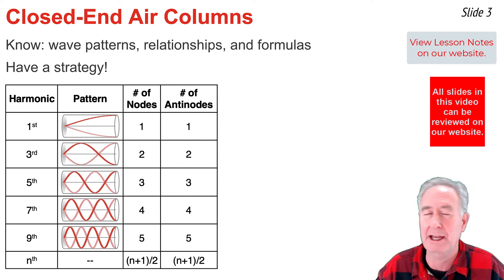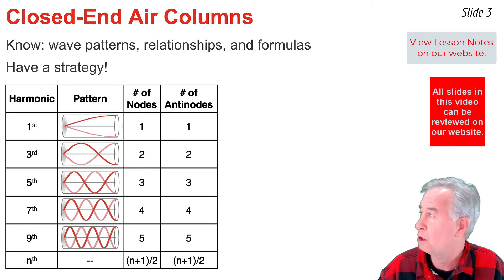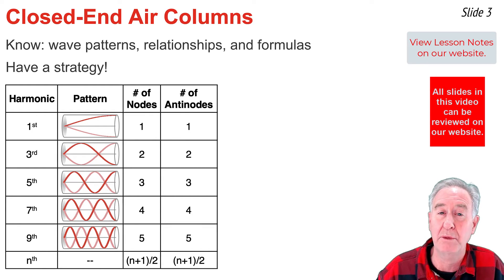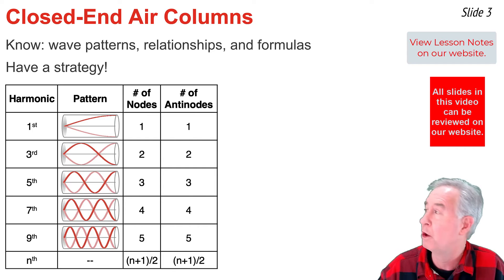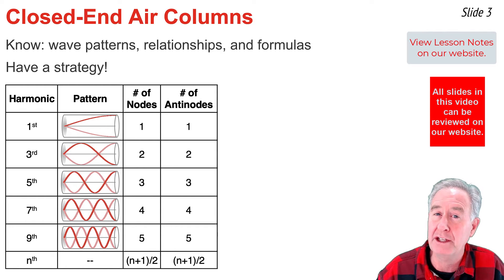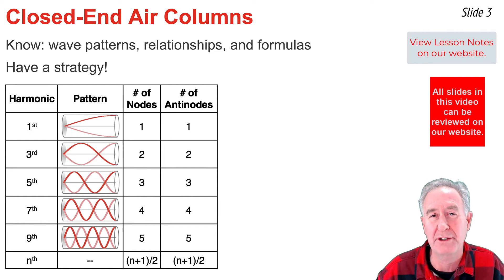In the second column of this table, the standing wave patterns are drawn for closed-end air columns. At the left end — the closed end — you'll always see a node, and at the open end there's always an anti-node. Because of this stipulation, the number of waves within each pattern is 1/4, 3/4, 5/4, 7/4, and 9/4 of a wave. Because the numerators of these fractions are odd numbers, all the harmonic numbers are odd numbers.